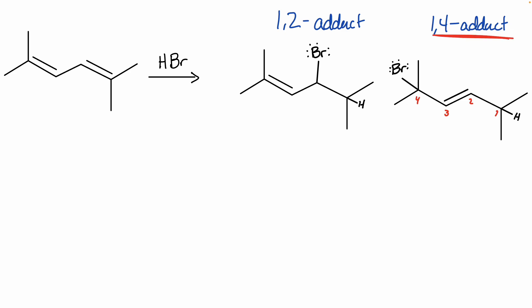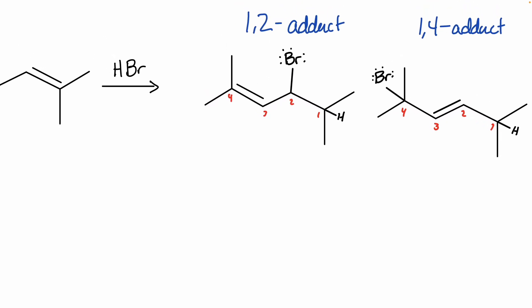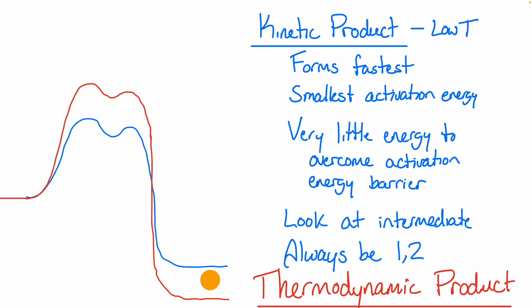In the 1,2 adduct, the double bond stays between carbons 3 and 4. When the resonance shift occurs in the 1,4 adduct, it moves to between carbons 2 and 3. The numbering here refers to spacing between H and halogen — not nomenclature numbering. A 1,2 adduct means they're 1 and 2 carbons apart; a 1,4 adduct means four carbons apart.